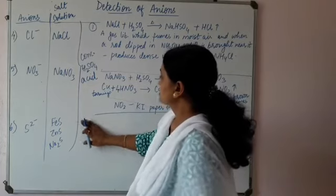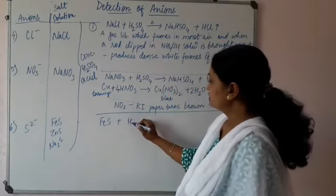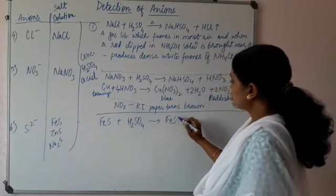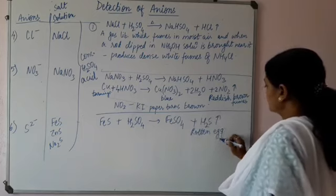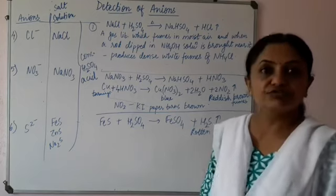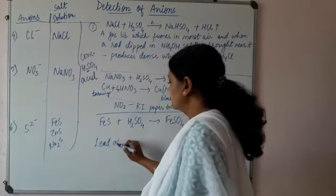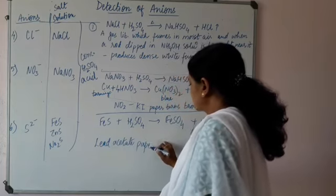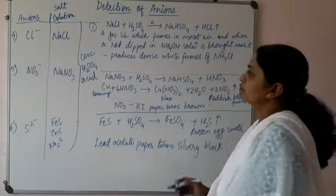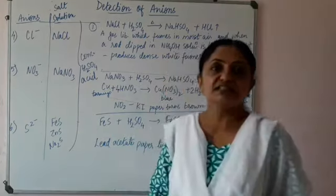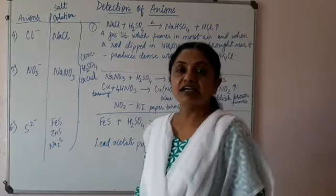If the salt is Na₂S and you add concentrated sulphuric acid, you get salt plus H₂S gas. If a gas liberates with the smell of rotten egg, it is confirmed the salt has sulphide. The confirmatory test is that lead acetate paper turns silvery black. So, the first three anions are detected by barium chloride followed by dilute sulphuric acid, and the last three by concentrated sulphuric acid.